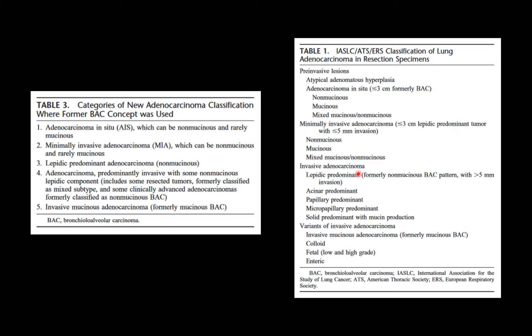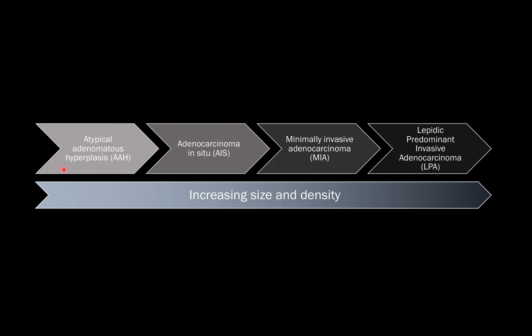From a radiologic perspective, it's helpful to think of these entities as existing along a spectrum of increasing invasiveness and malignant potential. Atypical adenomatous hyperplasia shows mild to moderate atypia, whereas adenocarcinoma in situ has moderate to severe atypia. For adenocarcinoma in situ, the cells grow in a lipidic pattern — along alveolar walls and respiratory bronchioles — without invading the stroma.